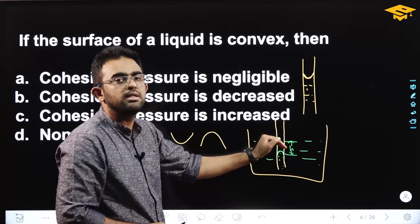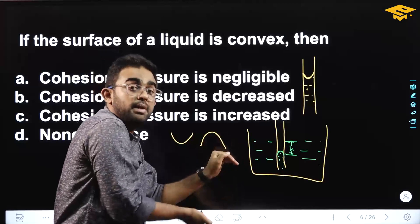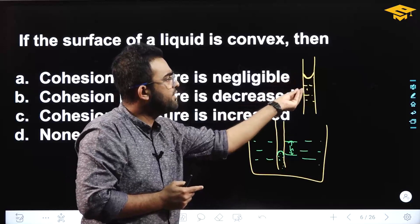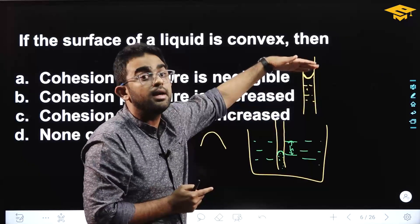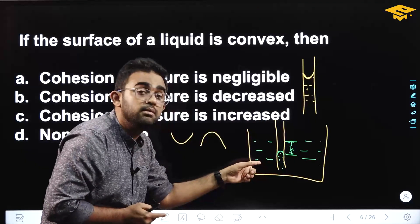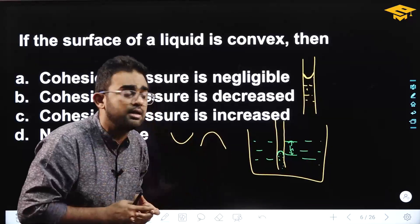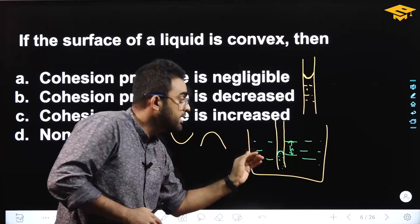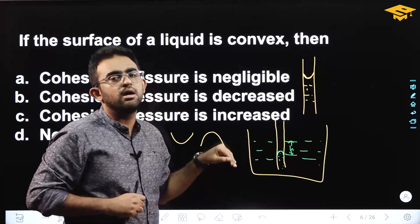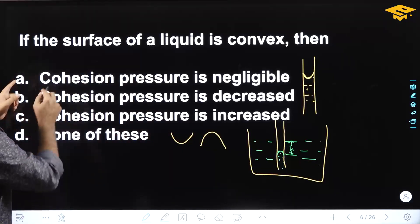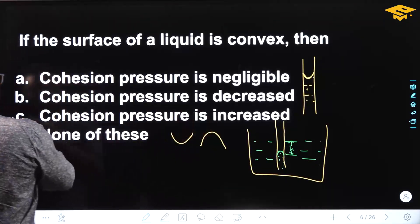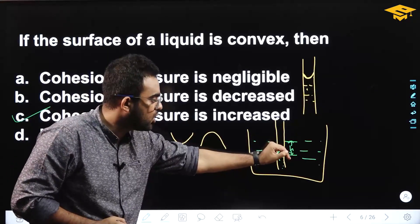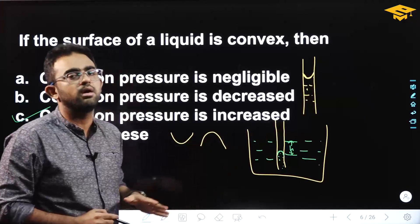Convex meniscus is capillary depression; capillary rise is due to a concave meniscus. Concave meniscus and capillary rise are due to cohesive force. Convex meniscus and capillary depression are also due to cohesive force.